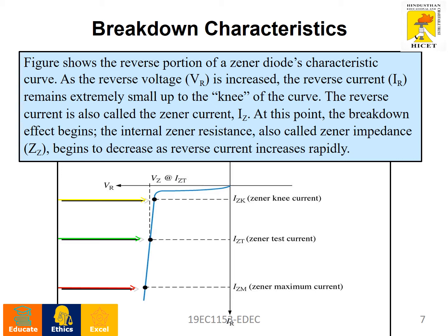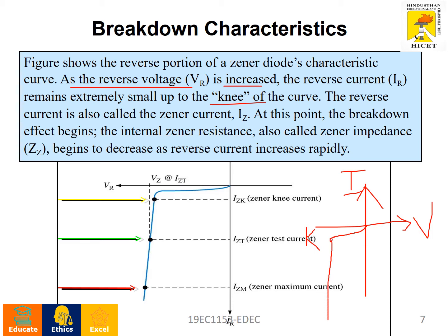For breakdown characteristics: as the reverse voltage VR is increased, the reverse current remains extremely small up to a knee point. In the V-I characteristics graph — V on the x-axis and I on the y-axis — up to a certain point the current remains nearly constant. After the knee point, the reverse current, also called the zener current, begins to increase. At this point the breakdown effect begins, and the internal zener resistance — also called zener impedance — decreases. The reverse current then increases rapidly, and after this knee point the voltage remains constant throughout operation.